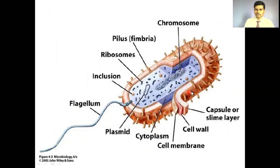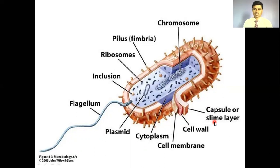On the outer surface of the bacterial cell there is a presence of hair-like structures; these hair-like or whip-like structures are the flagella. The hair-like structures are also called pili or fimbriae. There is an outermost capsule made up of slime substances, which does not allow the bacterial cell to desiccate. Inside the capsule is the bacterial cell wall made up of NAG and NAM.